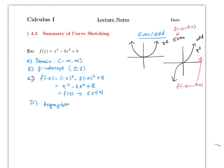For part D, you check for asymptotes. Since this is not a rational function, there are none. You can only have vertical asymptotes where you divide by zero, and horizontal asymptotes come from the end behavior as x goes to infinity or negative infinity — which here is not a finite value.